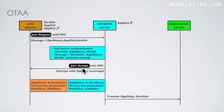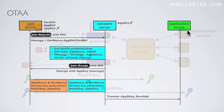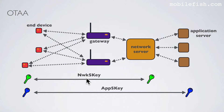The message itself is encrypted with the AppKey. The network server sends a join accept response back to the ANT device containing the encrypted message and the message integrity code. Now, both the ANT device and network server share the same AppNonce and DevNonce. The ANT device and network server use the AppNonce and DevNonce to generate two session keys: the network session key and the application session key.